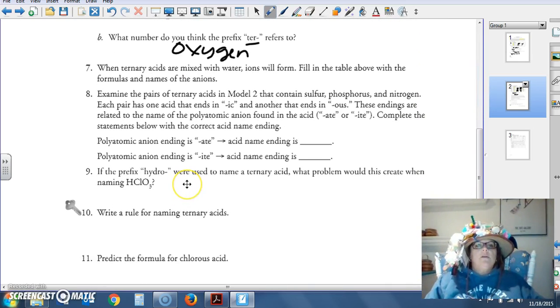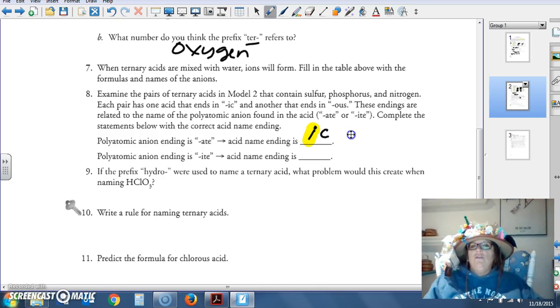So polyatomic anions that end in ate, acid name ends in ic. Think of it this way. If you eat too much, you'll feel icky. So you ate too much, you feel icky.